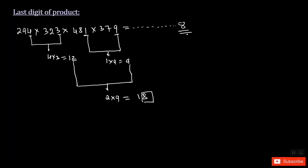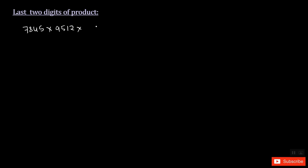When you multiply all those numbers you get a very huge number, but the last digit is always 8. Now sometimes you may also get a question asking what would be the last two digits of a product instead of just the last one digit. So let's take this type as well. If I have a number like 7845 times 9512 times 408 times 613 — and they ask what would be the last two digits of this product — then you have to take the last two digits of each number and multiply them the same way.